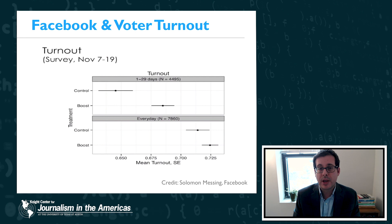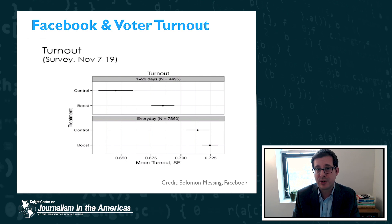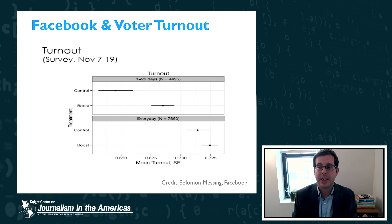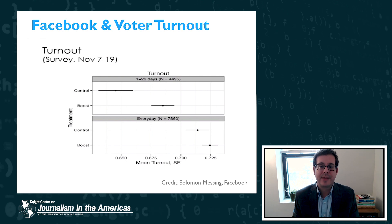Consider the results of an internal study done at Facebook in 2012 shown in this slide. The data scientists at Facebook looked at the impact of showing people more hard news information in their news feeds. They compared the regular version of the news feed curation algorithm, labeled as control in this slide, to an experimental version of the algorithm labeled as boost. In the boosted experimental condition, they turned up the visibility of hard news information that was seen by people in the news feed.